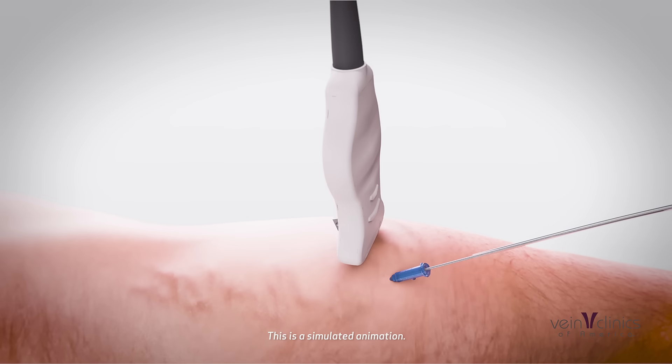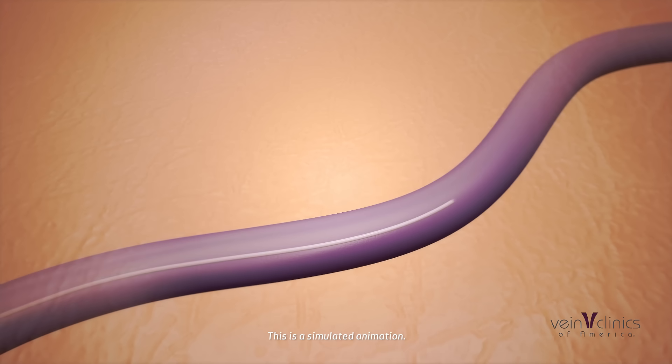Then a sheath is inserted along the guide wire and fed through the vein. The guide wire is removed, and the doctor gently places a small radiofrequency fiber inside the sheath into the vein. Radio wave heat is delivered to heat and collapse the targeted vein.